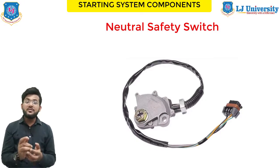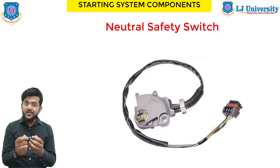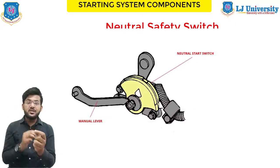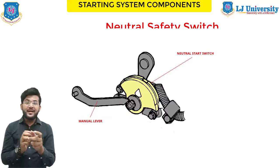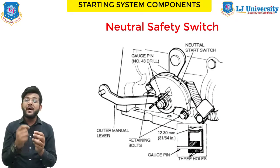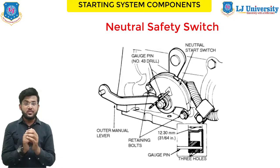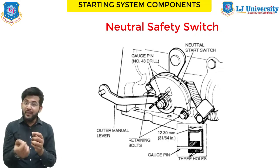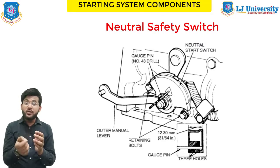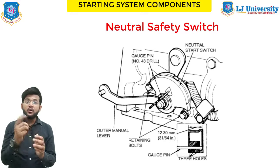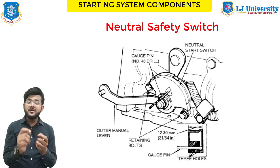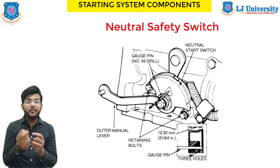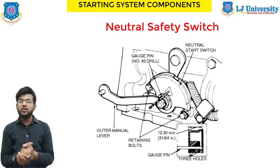Next is the neutral safety switch. This switch denies current to the starter circuit when the transmission is in any gear other than Neutral or Park on automatic transmissions. It is normally connected to the transmission linkage or directly on the transmission. Most cars use the same switch to apply current to the backup lights when in Reverse. On standard transmission cars, the switch is connected to the clutch pedal so the starter will not engage unless the clutch is depressed. If you need to move the shifter away from Park or Neutral to start the car, this switch likely needs adjustment.